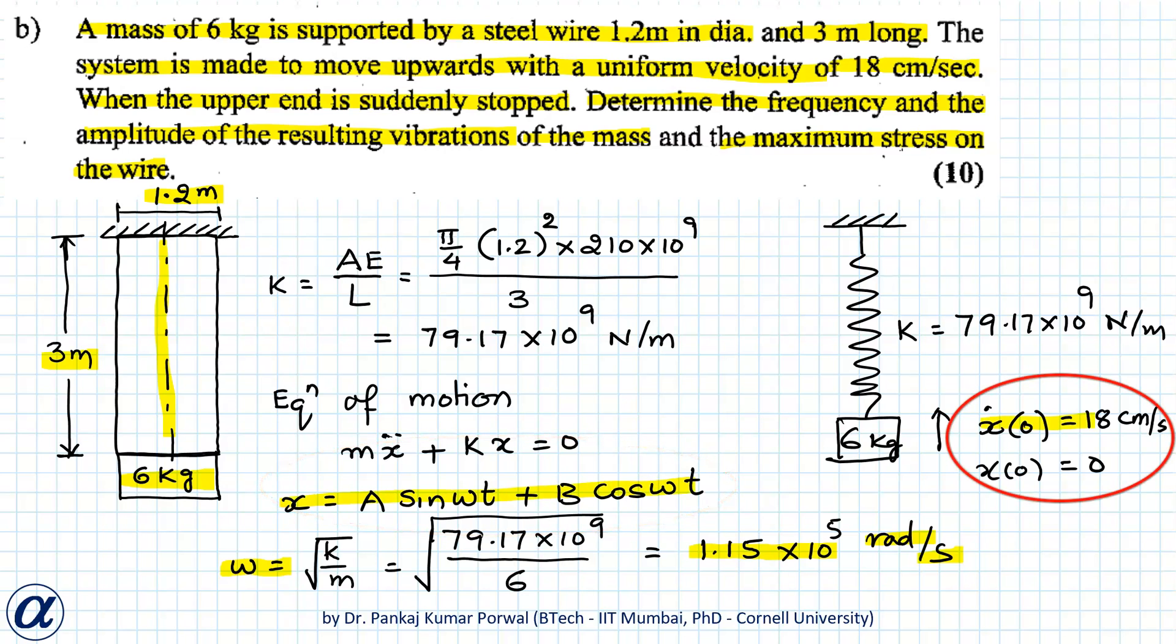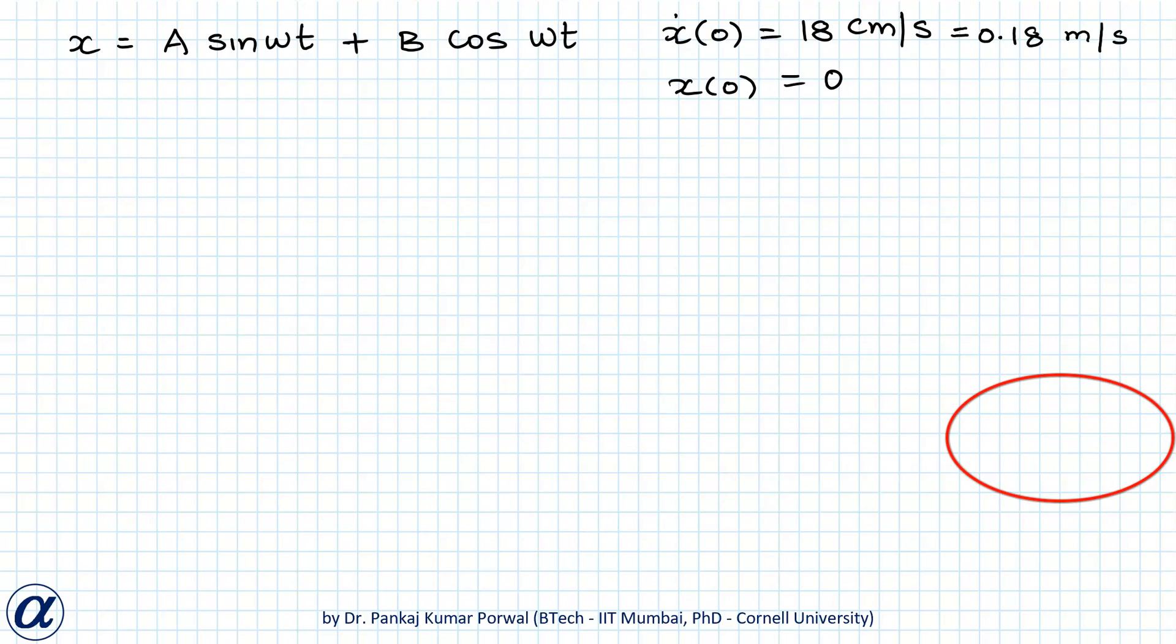So here I have my solution and I have changed x dot 0 from 18 centimeter per second to 0.18 meters per second. Now I will start with substituting x 0 equals to 0 in my solution.